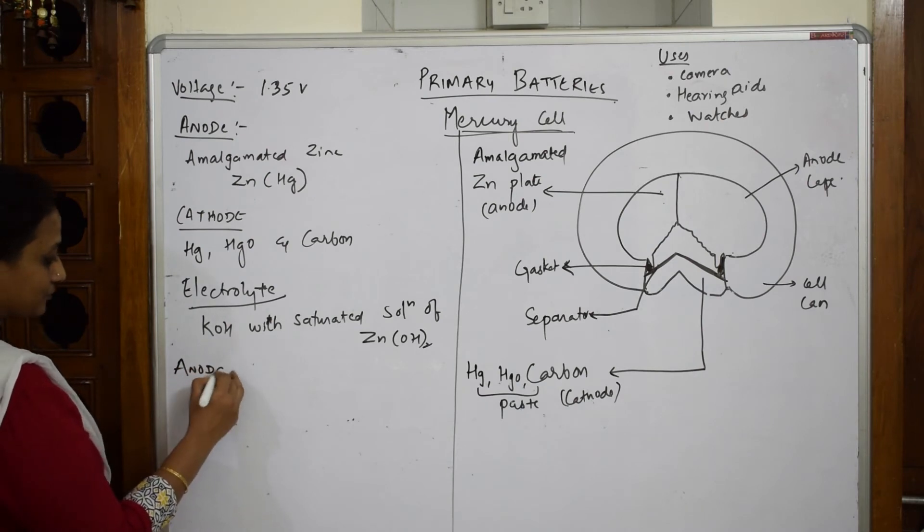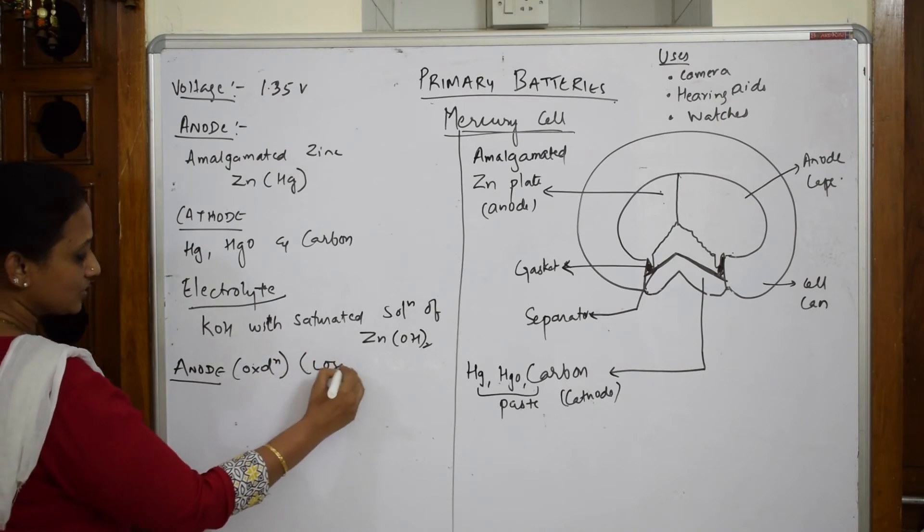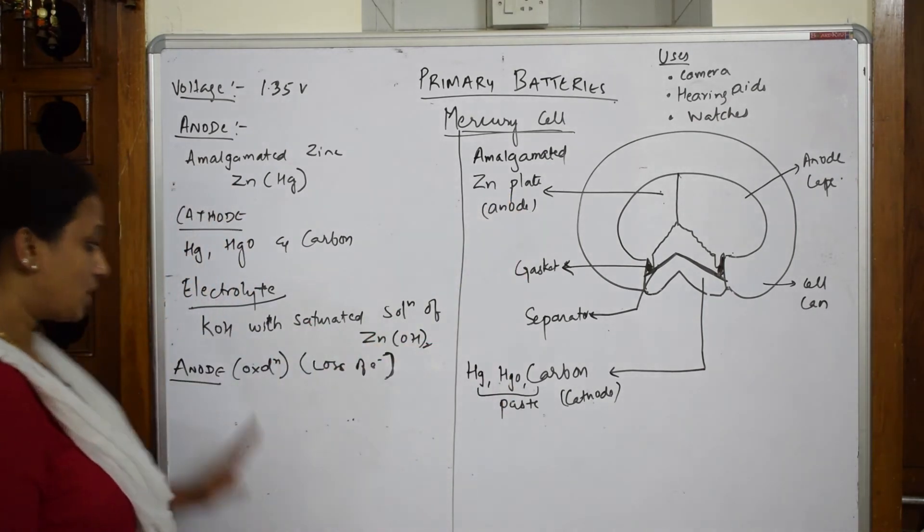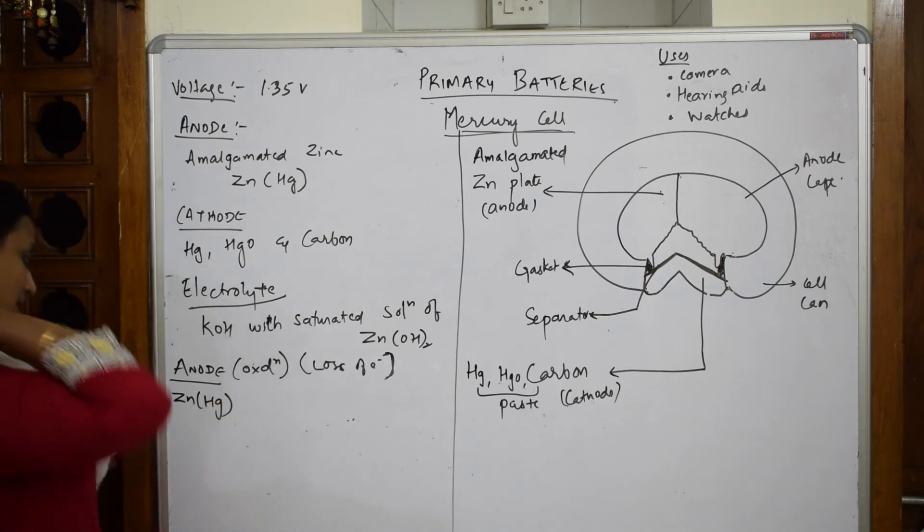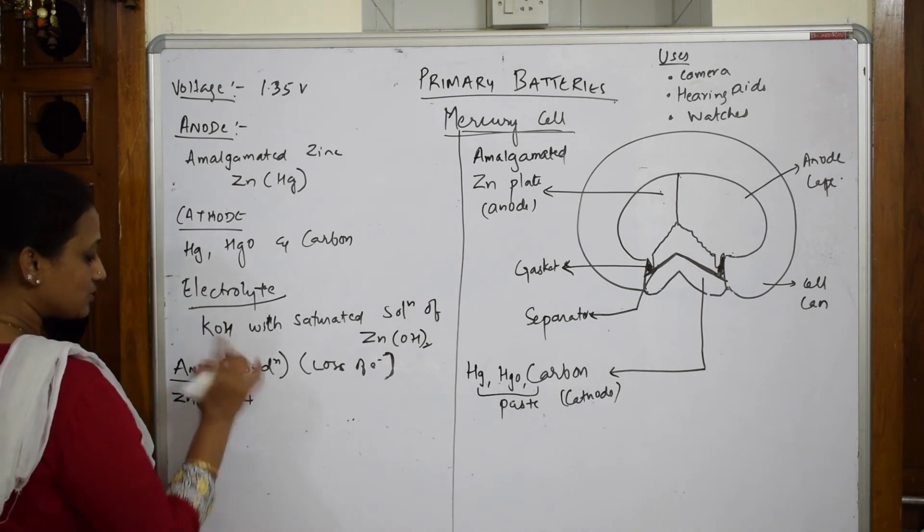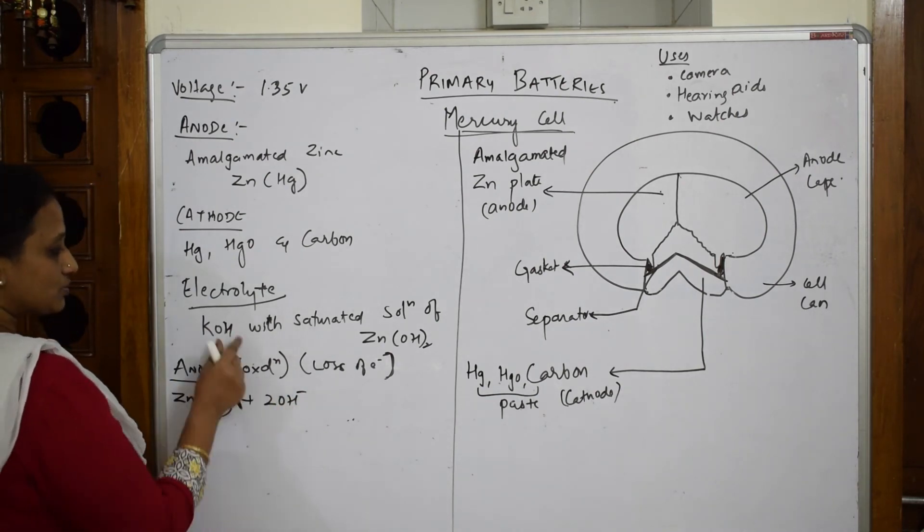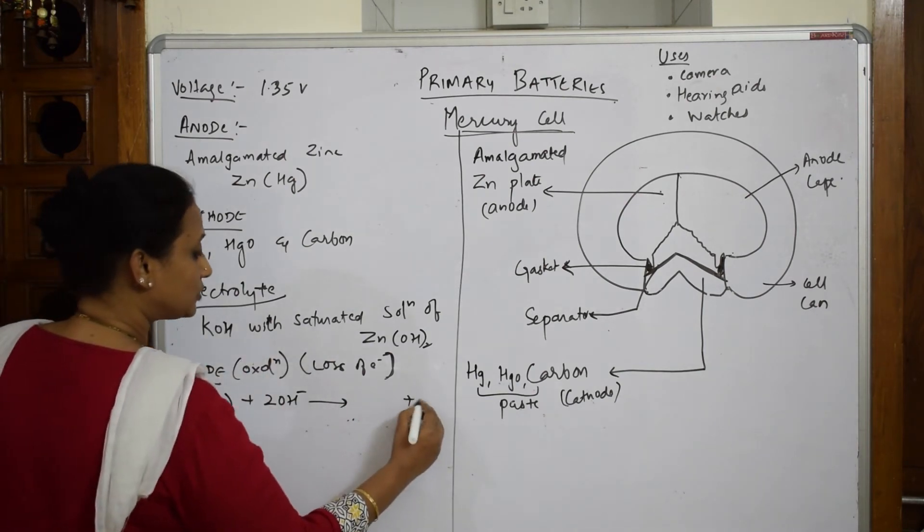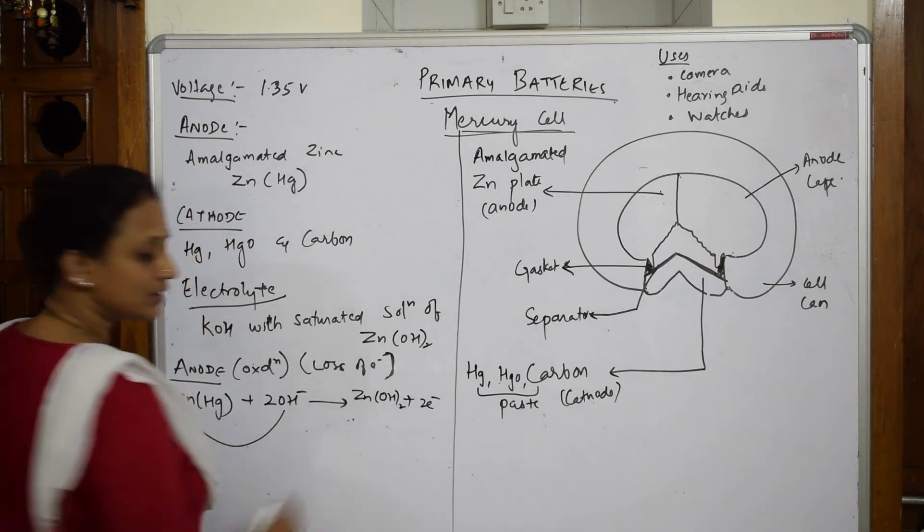First, let's write the anodic reaction. Observe carefully, anodic reaction - oxidation will happen, loss of electrons. Where will it start? We have anode here. Write zinc amalgam, this is going to combine with KOH as electrolyte. The OH⁻ from here, two OH⁻ - they'll get cancelled later. So two OH⁻, they are going to release out two electrons to form a complex. You get zinc hydroxide.